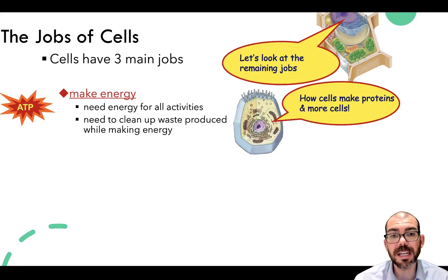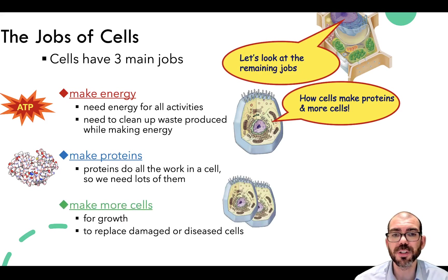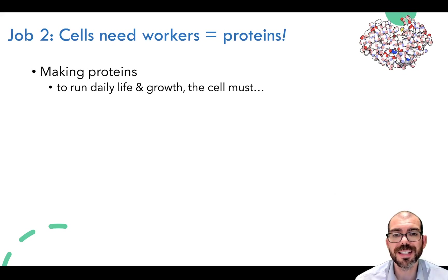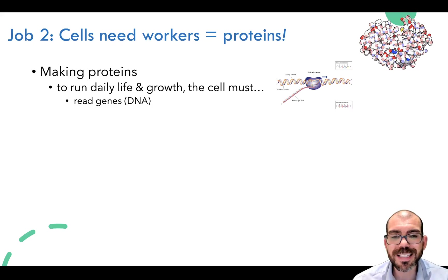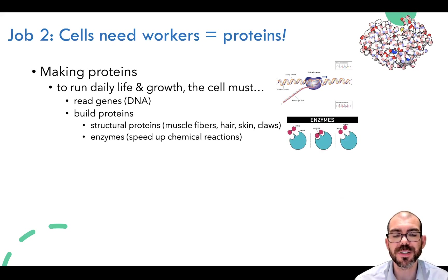Now we need to look at the remaining two jobs that cells do: specifically how cells are able to make proteins, and how cells are able to make more cells. So let's look at job two — cells need workers. They need proteins to run the daily life and growth of a cell. These proteins are going to be there to read genes, read DNA, and translate that code into proteins that can do work. Proteins also provide structure — this is what makes up muscle fibers, hair, skin, and claws.